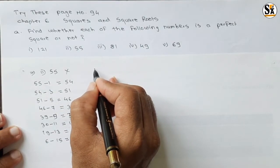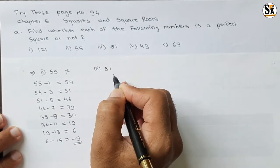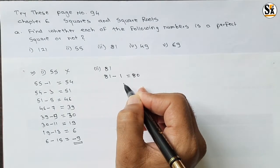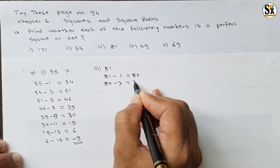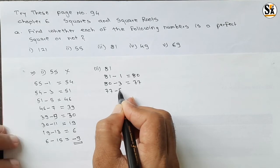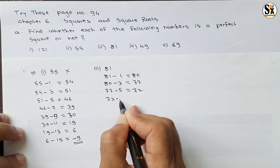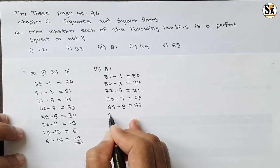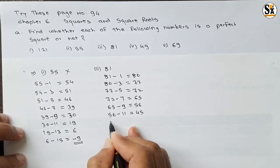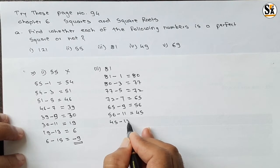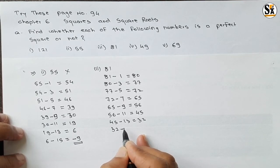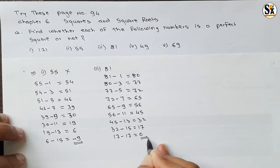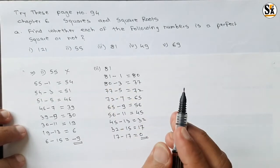See the next number: 81. Follow the same procedure: 81 minus 1 gives 80. 80 minus 3 gives 77. 77 minus 5 gives 72. 72 minus 7 gives 65. 65 minus 9 gives 56. 56 minus 11 gives 45. 45 minus 13 gives 32. 32 minus 15 gives 17. 17 minus 17 gives 0. We are getting answer 0, so 81 is a perfect square number.